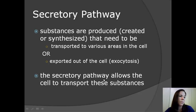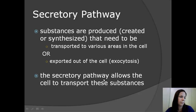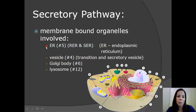Now let's look at how the cell uses compartmentalization in the secretory pathway of the cell. Substances are produced — which means created or synthesized — that need to be either transported to various areas in the cell or exported out of the cell, which is called exocytosis. The secretory pathway allows the cell to transport these substances. There are four main membrane-bound organelles that work together to create a secretory pathway. The endoplasmic reticulum, which is number five in this diagram right over here — all of this here is the endoplasmic reticulum.